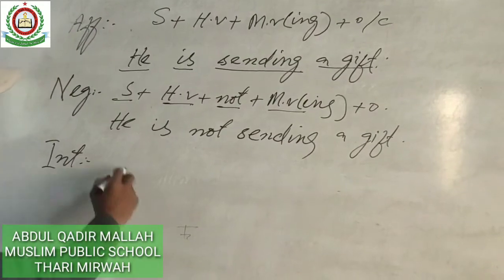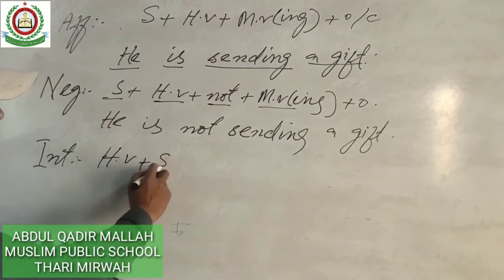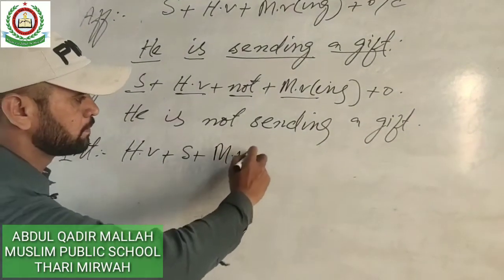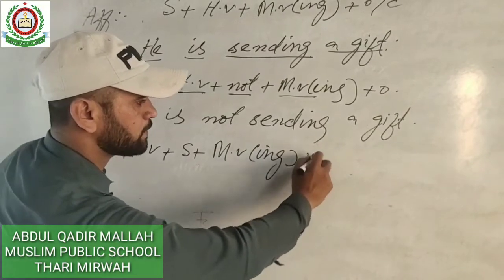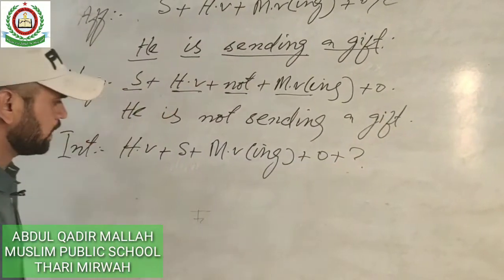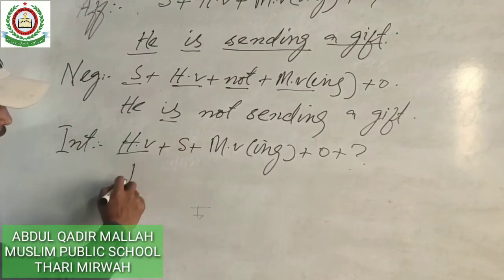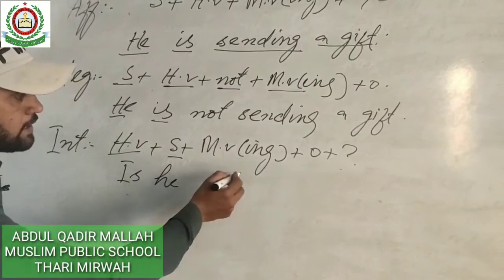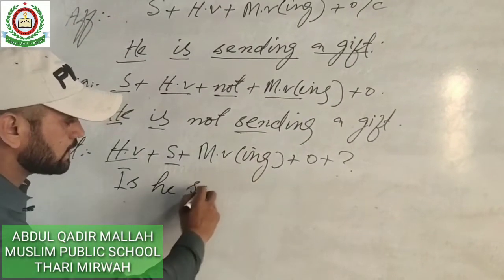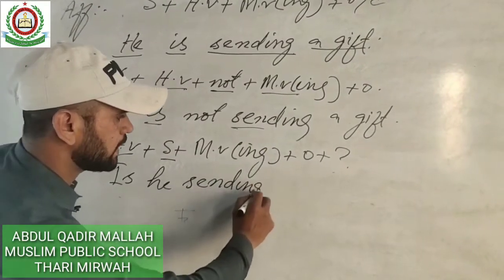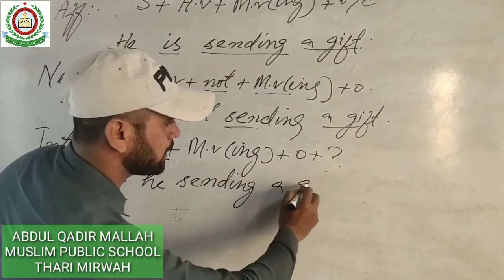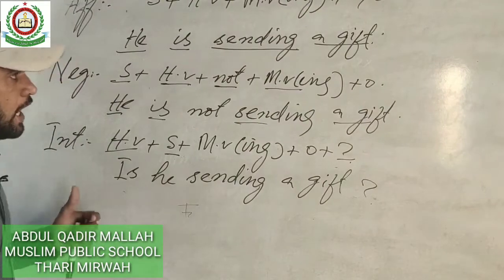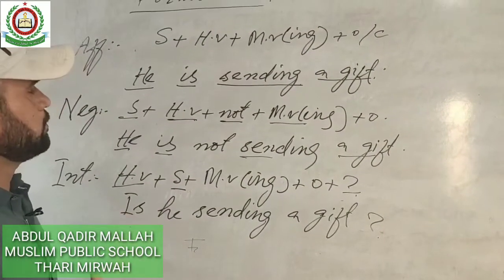Now let's change the sentence into an interrogative. The structure for interrogative is: Helping verb + Subject + main verb in -ing form + object + question mark. For example: 'Is he sending a gift?' Here, 'is' is the helping verb placed first, then 'he' the subject, then 'sending,' then 'a gift,' and finally the question mark.